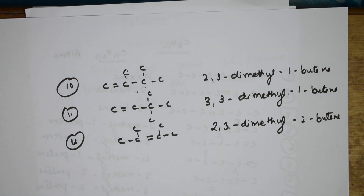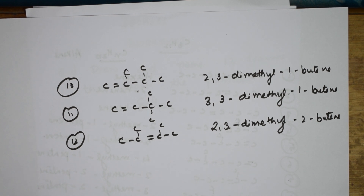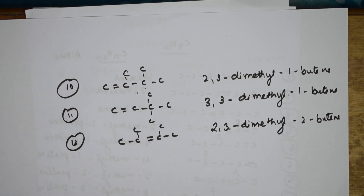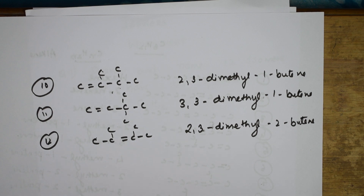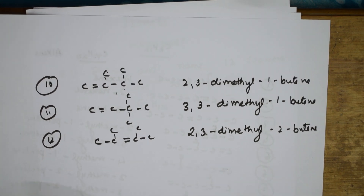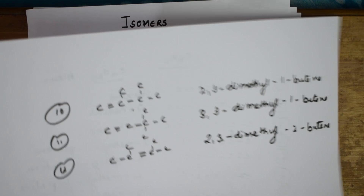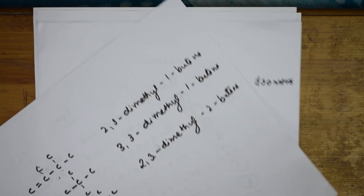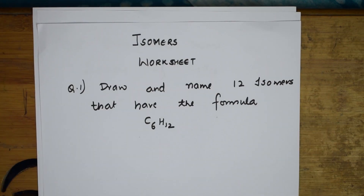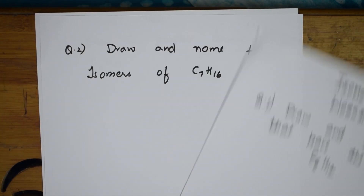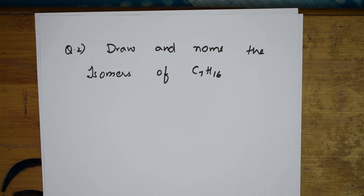Done, students! All 12 isomers have been drawn for the given structure C6H12. Now we will try one more question. Let's see what the next question is.